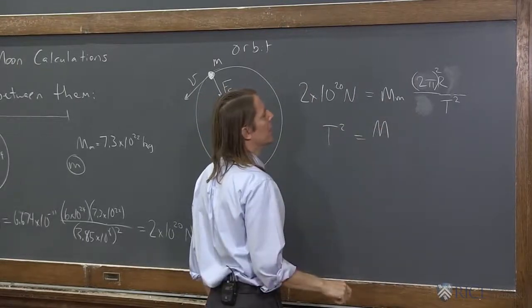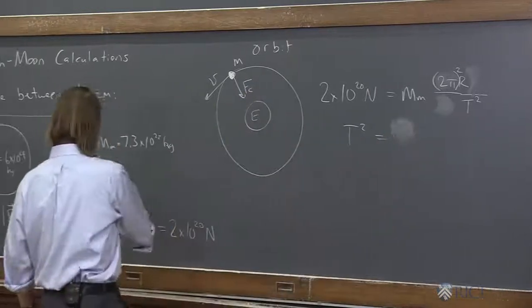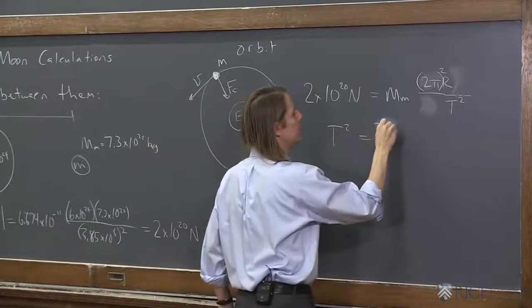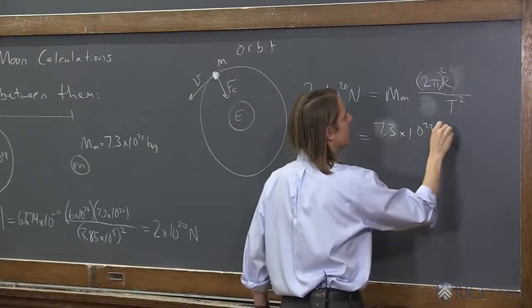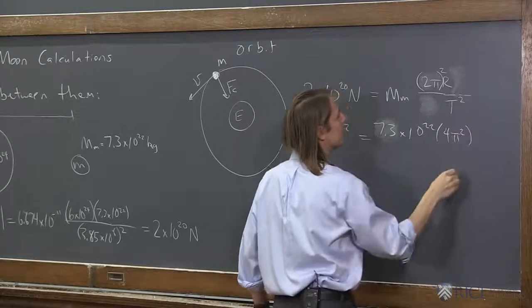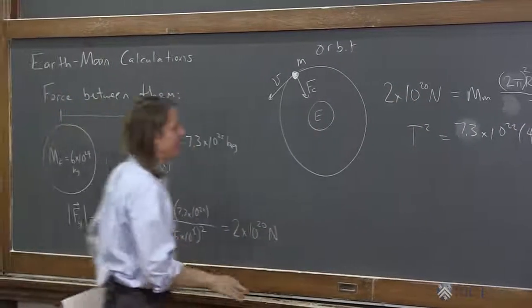And we've got, that's mass of the Moon, right? Yeah. So let's see. We'd have the mass of the Moon, 7.3 times 10 to the 22. We'd have 4 pi squared there. We'd have the radius, or the distance there, 3.85 times 10 to the 8.